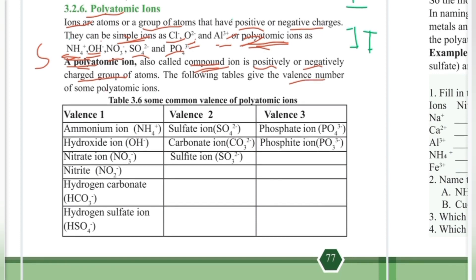The following table gives the valency numbers of polyatomic ions. For example, ammonium (NH4) has a valency of plus 1. Nitrate is listed with its corresponding valency number.